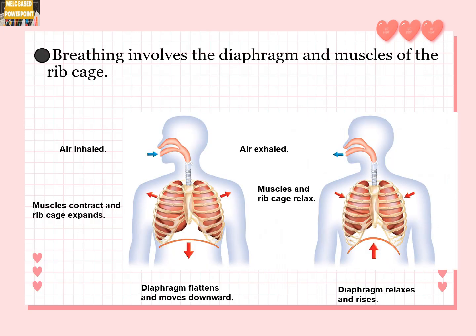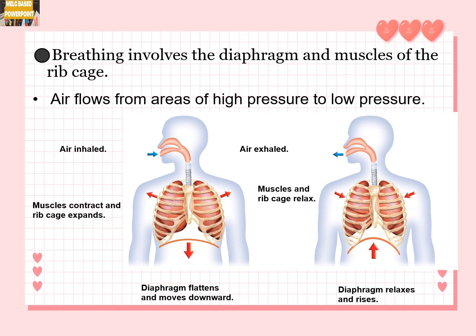Breathing involves the diaphragm and muscles of the ribcage. Air flows from areas of high pressure to low pressure. When air is inhaled, muscles contract and the ribcage expands, and the diaphragm flattens and moves downward. When air is exhaled, the muscles and ribcage relax, and the diaphragm relaxes and rises.